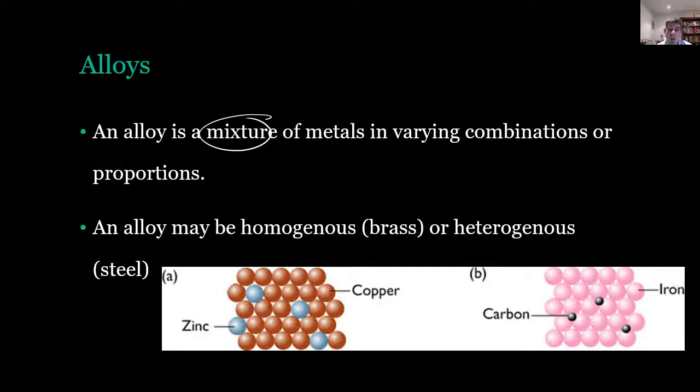Alloys can be one of two types: homogenous such as brass, the first example that we have here, or heterogeneous such as steel. The main thing that distinguishes these is that in a homogeneous alloy the replacement metal, in this case the zinc,